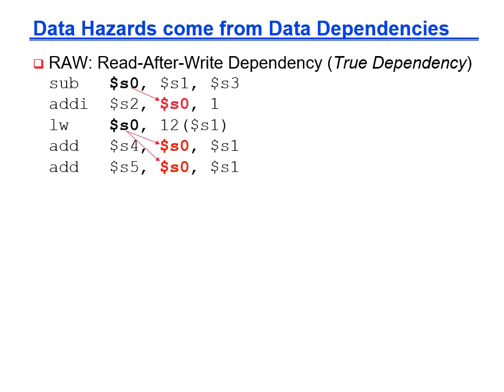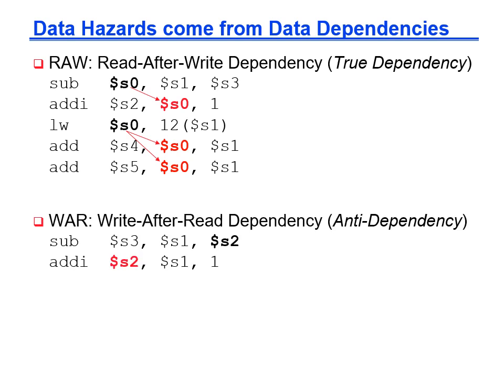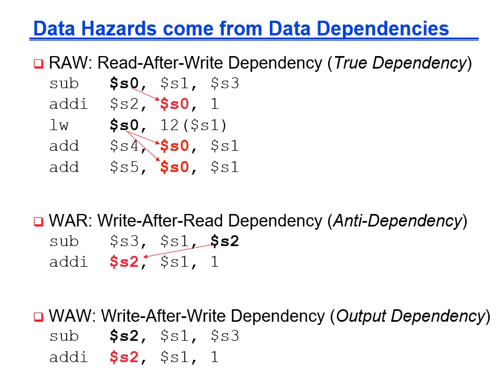This diagram shows how the $s0 register is written to by the sub instruction and read from the add-immediate, or written to by load word and read from the add instructions. The other two dependencies are write after read, WAR, or anti-dependence, and write after write, or output dependency. These can be ignored for now, but they are a concern for more complex pipeline designs.